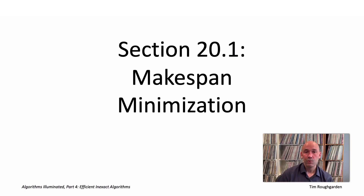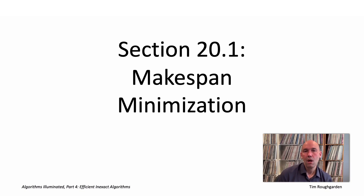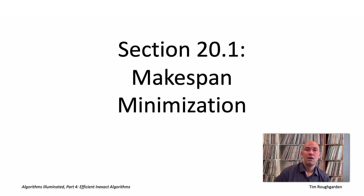You can't have it all with NP-Hard problems. You have to give up on at least one of generality, speed, or correctness. So in applications where generality and speed are both mission critical, you have no choice but to relax correctness and consider fast, heuristic algorithms that are not going to be correct on every input.